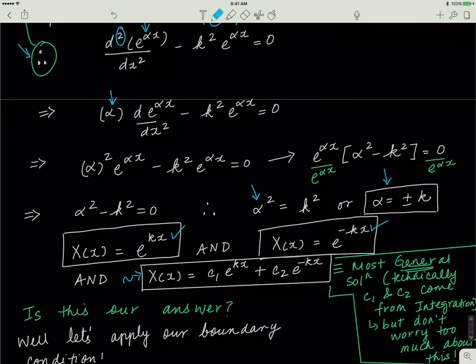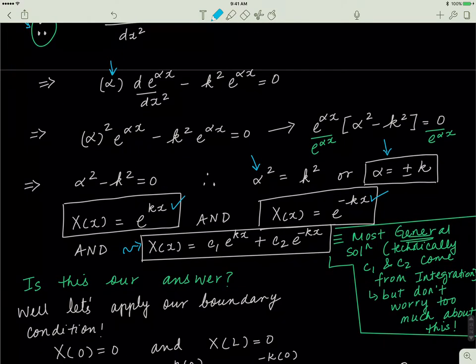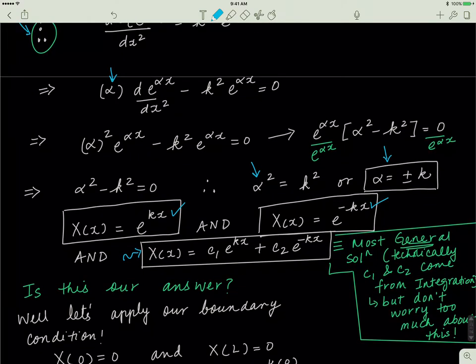The pressing question is: is this our answer? We have to apply our boundary conditions and find the values of c1 and c2. At our boundaries, x equals zero and x equals L — from the physical system of a vibrating string — we know that the x component of u equals zero at both boundaries. I'm going to plug this information back into the general equation to figure out what c1 and c2 are.